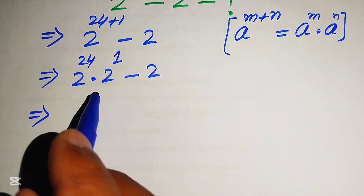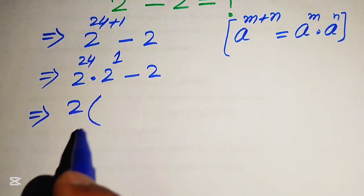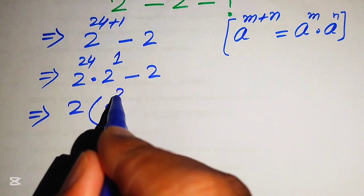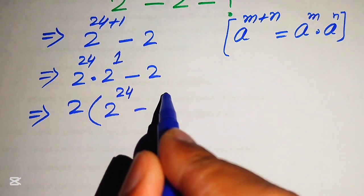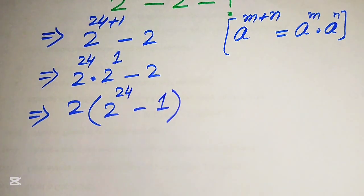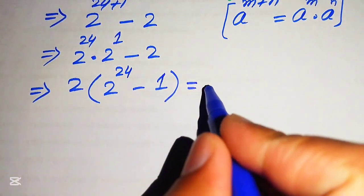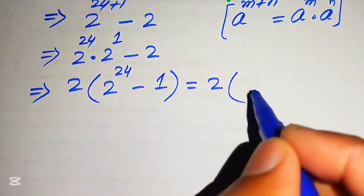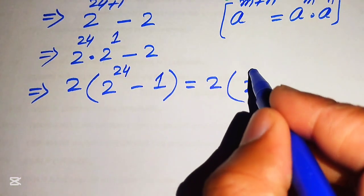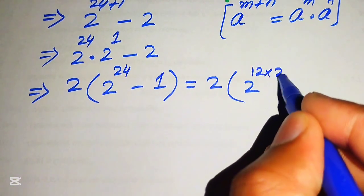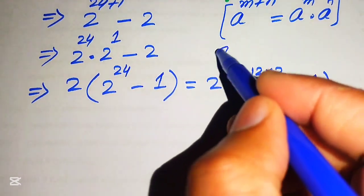In the next step we need more simplification. We take out a common factor of 2, and the remaining terms give us 2 to the power of 24 minus 1. We need further simplification, so we write this as 2 times of (2 to the power of 24 minus 1), and we rewrite the exponent 24 as 12 multiplied by 2.